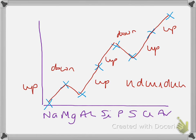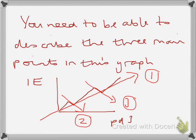It's one way of remembering the shape because sometimes you get questions where they put some of the crosses on and you've got to put in the values for the unspecified ones. You need to be able to describe three main points from this graph so I've labelled them 1, 2 and 3.